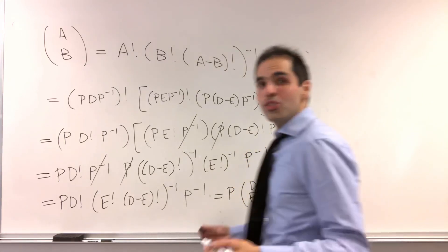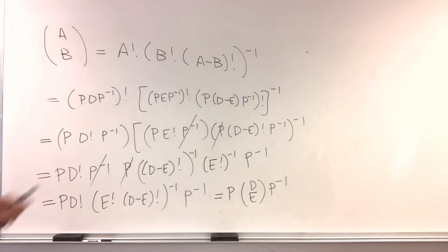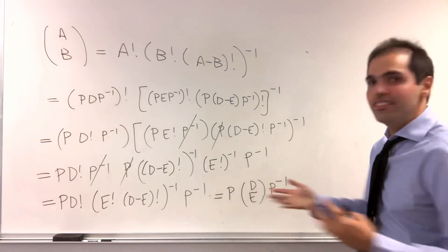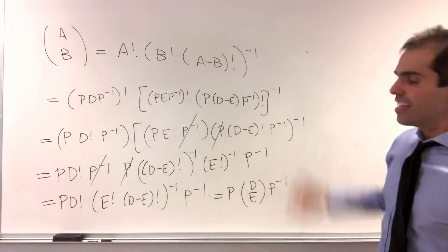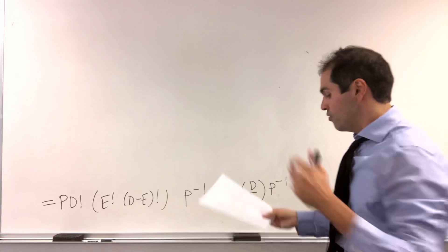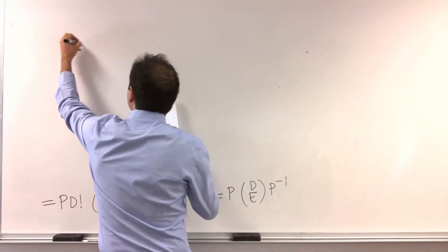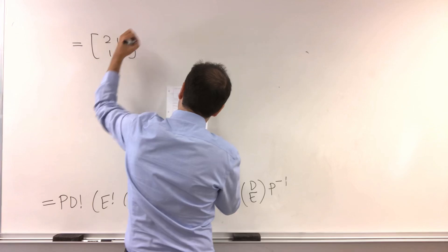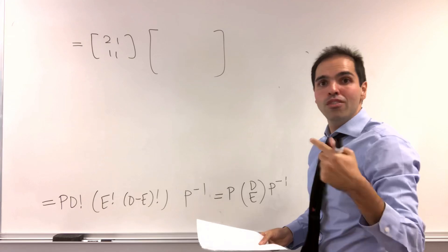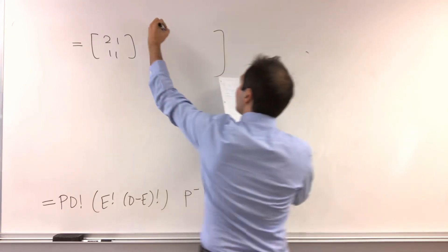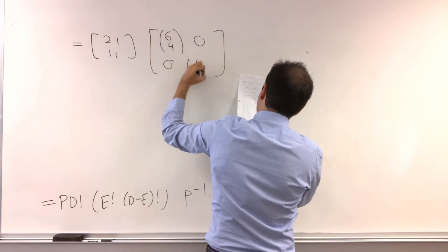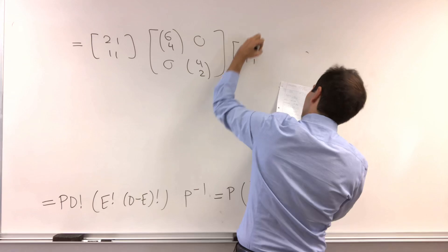So to do a choose b, you just do d choose e on the eigenvalues. But it turns out, for diagonal matrices, d choose e, that's just the choosing part on the eigenvalues. So in fact, in terms of what we had, this becomes 2, 1, 1, 1. Now remember, for d, the eigenvalues is 6 and 4. For e, it's 4 and 2. So you do 6 choose 4, 0, 0, 4 choose 2, and then 2, 1, 1, 1, inverse.